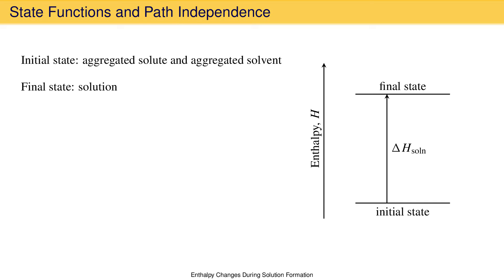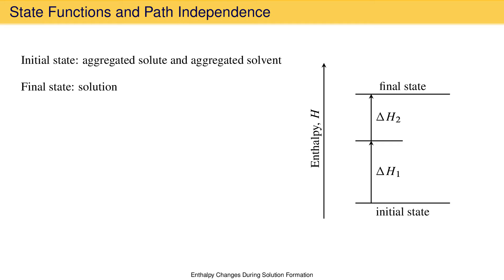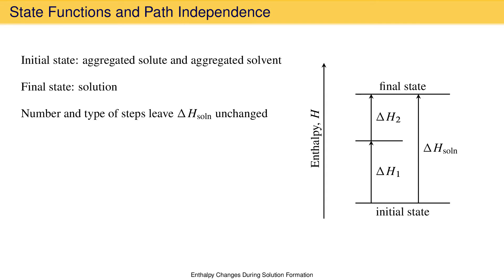This is a good approximation of what actually happens in the laboratory when a solution is made — the solute and solvent are mixed and the solution forms, appearing to happen in one step. But the heat of solution is the same regardless of how many steps there are between the initial state and the final state. We could eliminate the single step and instead go from the initial to the final state by stopping at an intermediate state first, making solution formation a two-step process. When combined, the enthalpy change for each step adds to give delta H solution. We don't have to stop at two steps; we could have three, four, or any number of steps. No matter how many steps or how large the enthalpy change is for each step, as long as the steps start in the initial state and end in the final state, the heat of solution is the same.